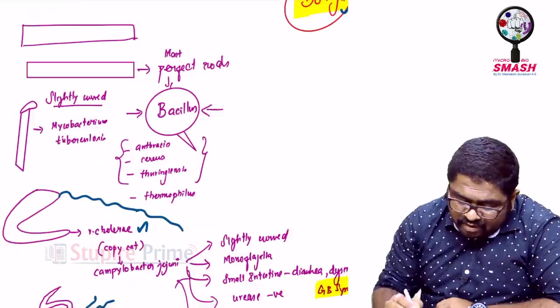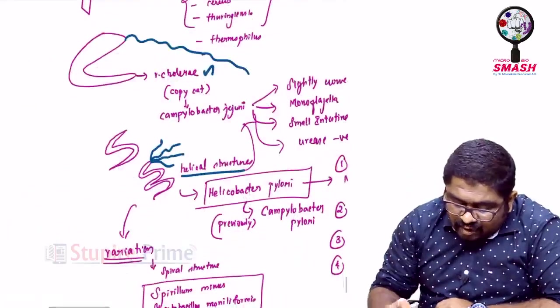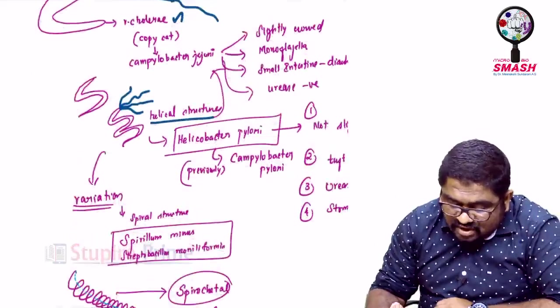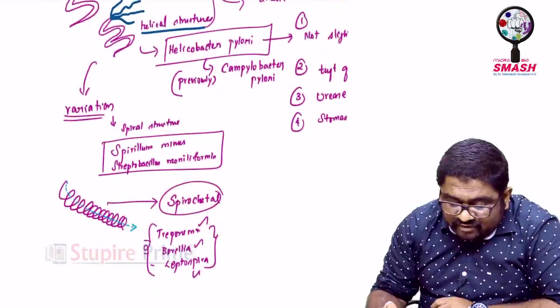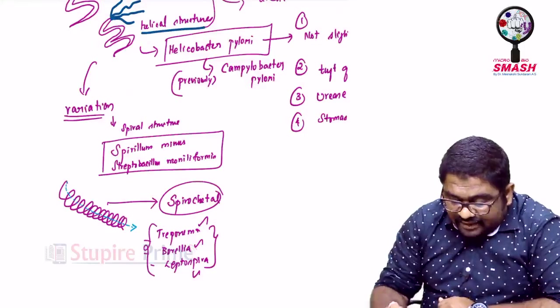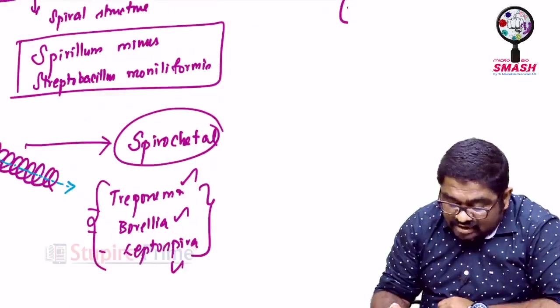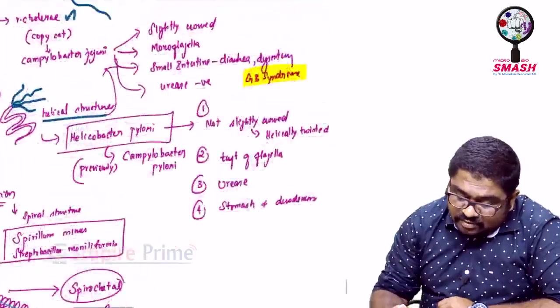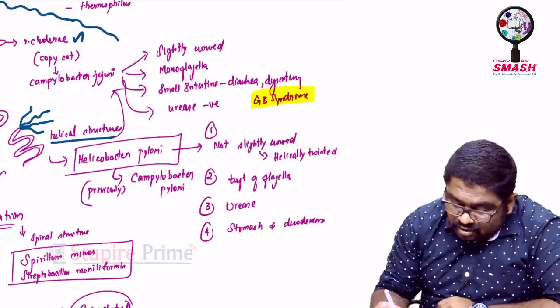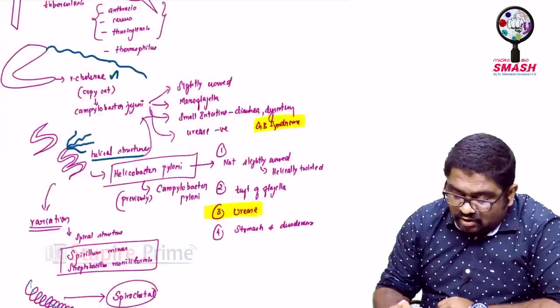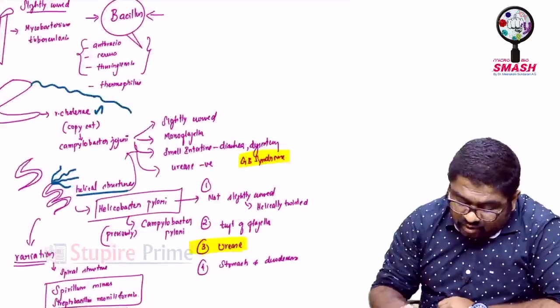That is, you have a perfect rod, slightly curved rod, properly curved rod and more extra curved rod called as helical structure. And you will also have a variant of helical structure called as spiral structure and extraordinary spiral structure called as spirochetal structure. And I have given you examples of each of them. So, make sure you remember these names for your betterment in answering a lot of MCQs.